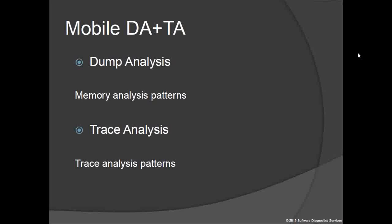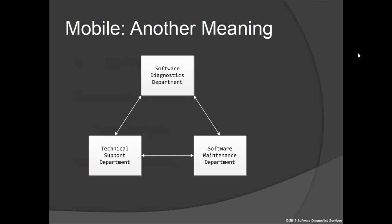To summarize, it is possible to reuse dump analysis and trace analysis pattern catalogs, and what we are doing is what we call mobile diagnostics. Finally, there is another meaning of mobile we would like to cover — it means flexible software diagnostics independent from support and engineering organizational structure and interaction, mainly for big companies. So it's not only software diagnostics of mobile platforms, but software diagnostics may become mobile itself.